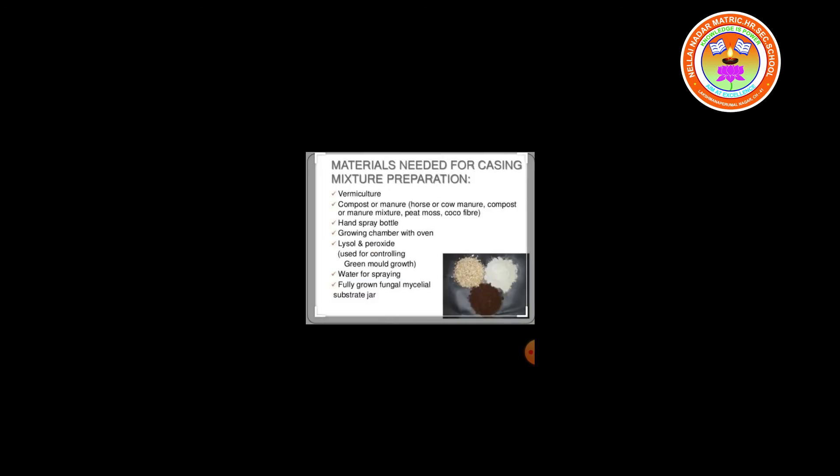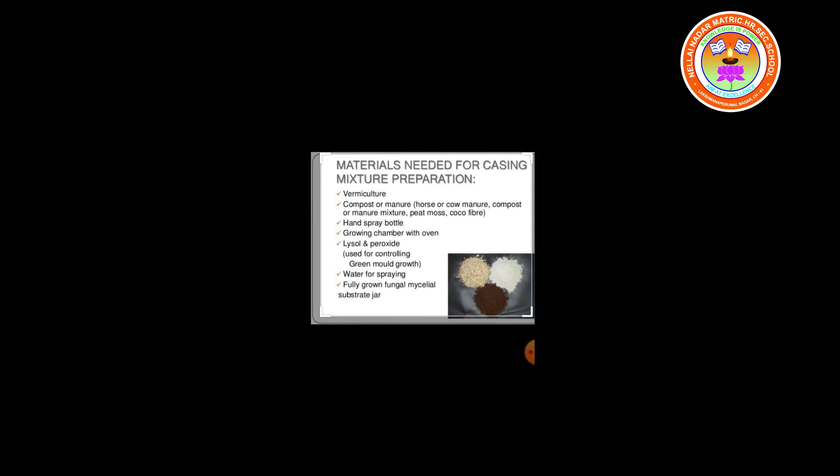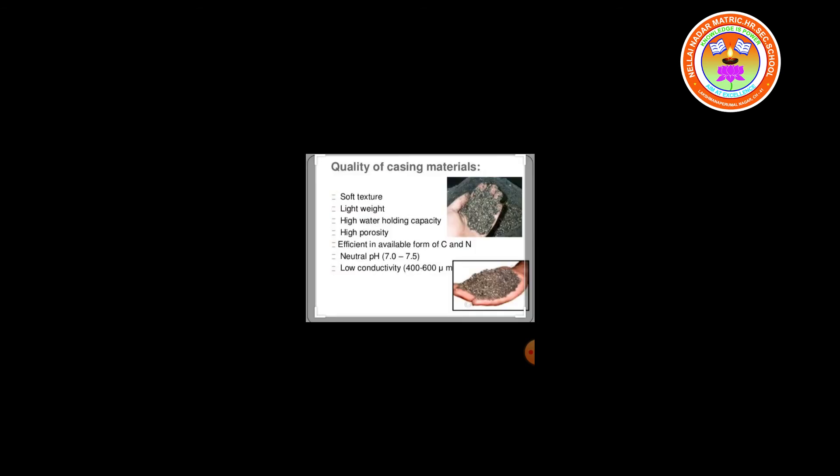Materials needed for casing mixture preparation include: vermiculite, compost or manure, hand spray bottle, growing chamber with oven, Lysol and peroxide used for controlling green mold growth, water for spraying, and a fully grown fungal mycelial substrate jar. The quality of casing material should be: soft in texture, lightweight, high water-holding capacity, high porosity, efficient in available form of carbon and nitrogen, neutral pH of 7 to 7.5, and low conductivity.